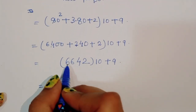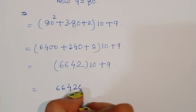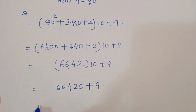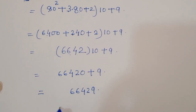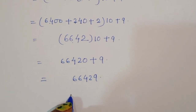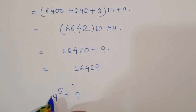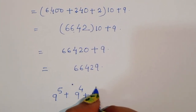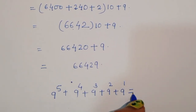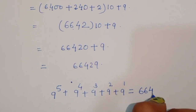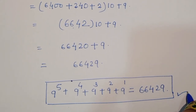When we multiply 6642 times 10 we get 66420, plus 9 equals 66429. So the value of 9 power 5 plus 9 power 4 plus 9 power 3 plus 9 power 2 plus 9 power 1 is equal to 66,429. That is our solution. Thank you.